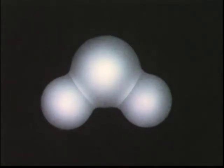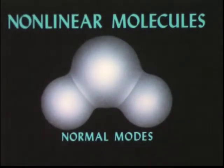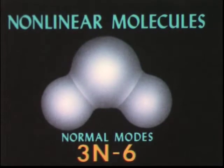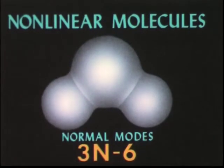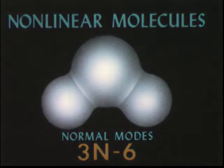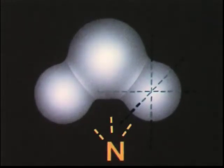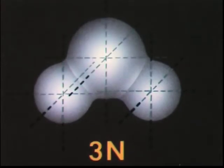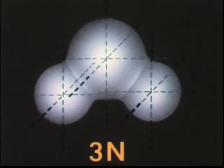The number of possible modes of vibration a molecule may have is determined by the number of atoms it has. For nonlinear molecules, it is three times the number of atoms less six. Let's see how this result is derived. First, in order to get the location of an atom in space, it is necessary to specify its three coordinates. If n represents the number of atoms in a molecule, it follows that a total of three times n coordinates are required to specify the positions of all the atoms. There are many ways of designating these positions in space.